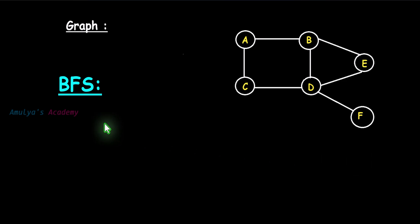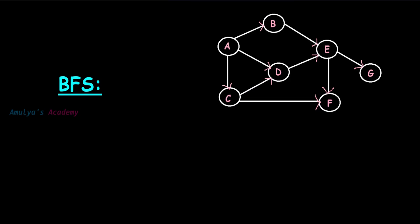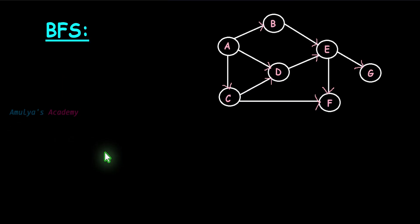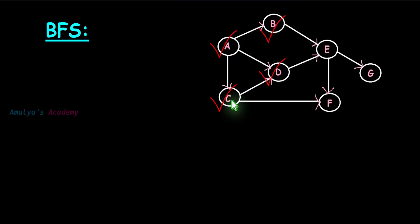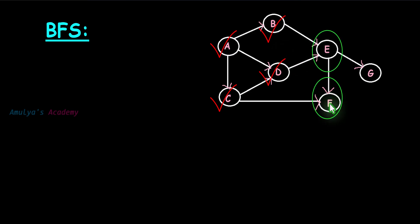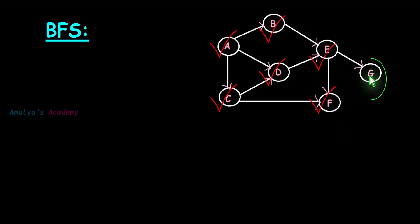Let's take another example with a directed graph. Choose A as the starting node and visit it. Next, visit all the unvisited connected nodes of A — here B, D, and C are adjacent to A, so visit them in any order. Then visit all unvisited adjacent nodes of those, which are E and F. Finally, visit G, which is the unvisited adjacent node of E. All nodes are now visited, so we are done.